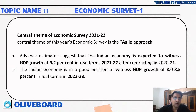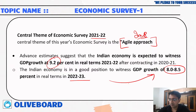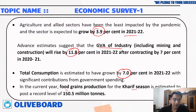The central theme of the 2021-22 Economic Survey is an agile approach. Regarding growth estimates, the Indian economy is expected to witness GDP growth of 9.2 percent. The Indian economy is in a good position with a GDP growth rate of 8 to 8.5 percent in real terms for 2023. Agriculture and allied sectors have seen a growth of 3.9 percent. The advanced estimate of gross value addition for industries is rising to 11.8 percent. Total consumption has grown by 7 percent. Kharif food grain production has reached a record 150.5 million tons.